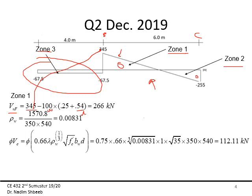Next, compute ρw (web reinforcement ratio), because Equation B for φVc requires it. ρw = area of five φ20 bars / (bw × d) = 0.00831. Plugging into the equation: φVc = 0.75 × 0.66 × (ρw)^(1/3) × λ × √f'c × bw × d = 112.11 kN.